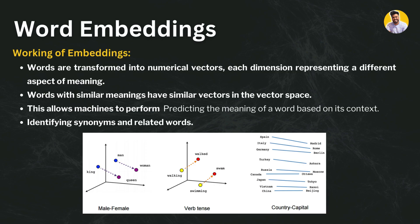Word embeddings work by transforming words into numerical vectors where each dimension represents a different aspect of meaning. Words with similar meanings have similar vectors and are close to each other in the vector space. This allows a machine to predict the meaning of a word based on its context, and to identify synonyms and related words. For example, this graph shows high correlation between king and queen, man and woman, verb tenses like walking/walked and swimming/swam, and country-capital pairs.